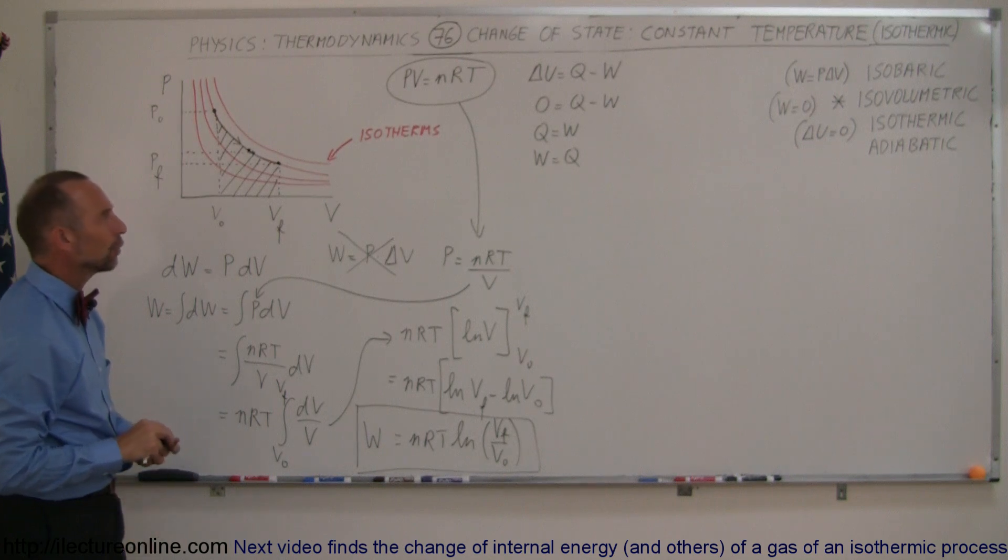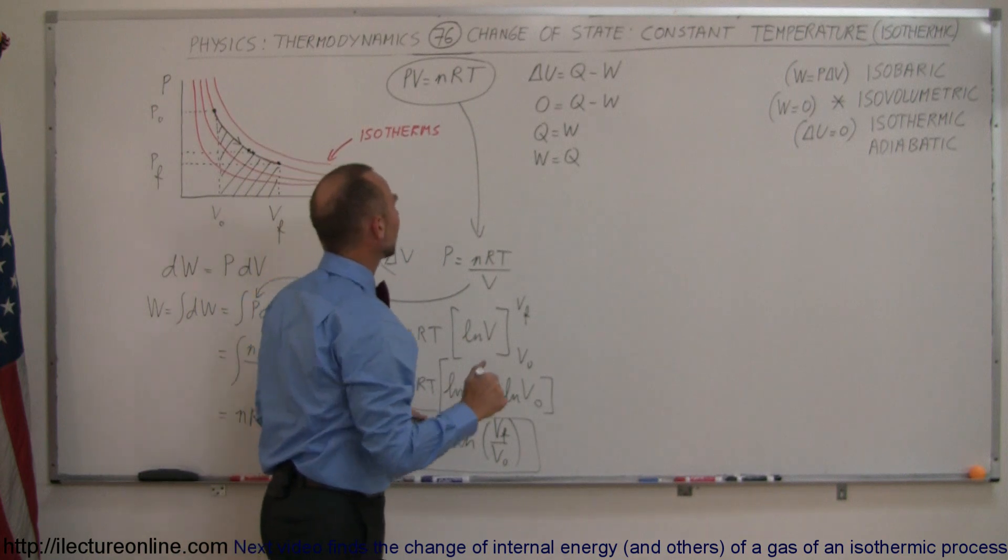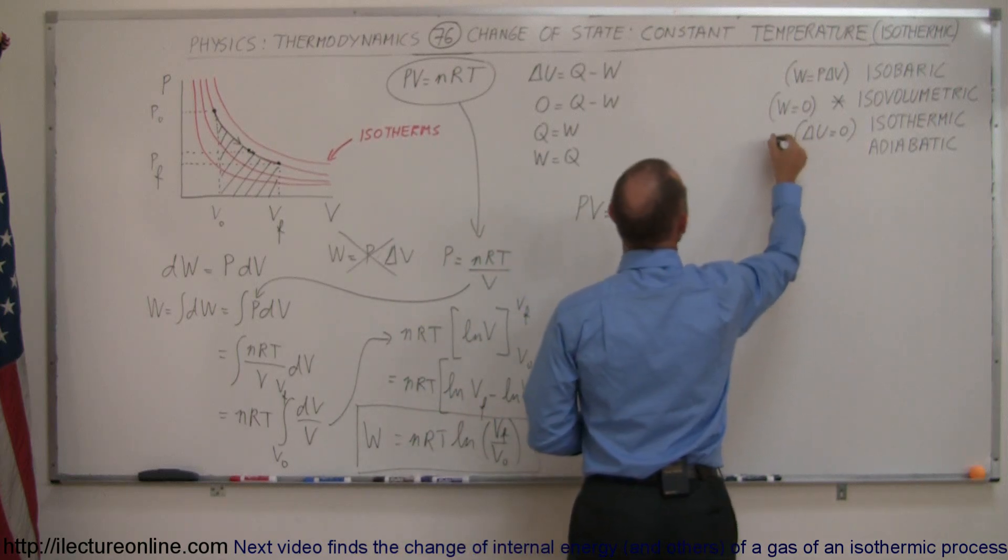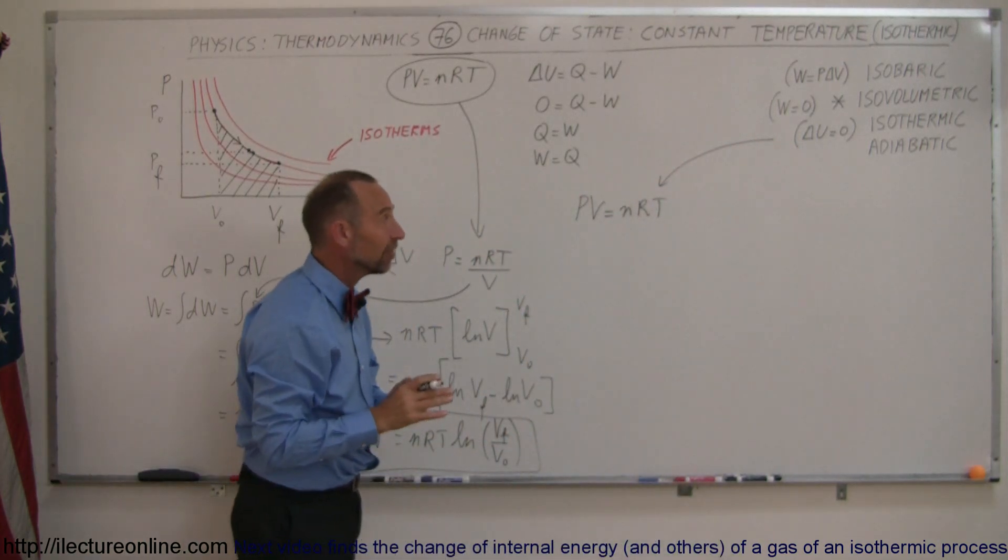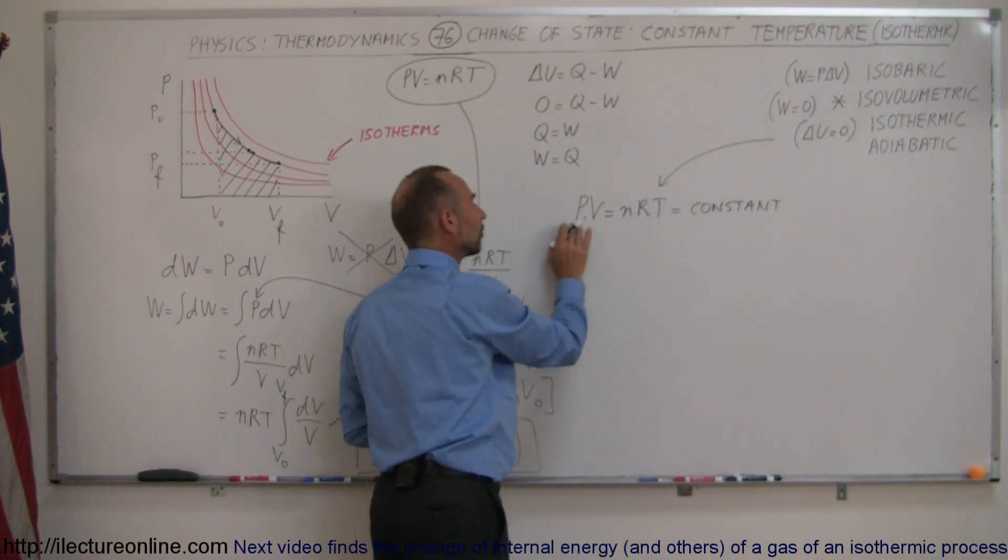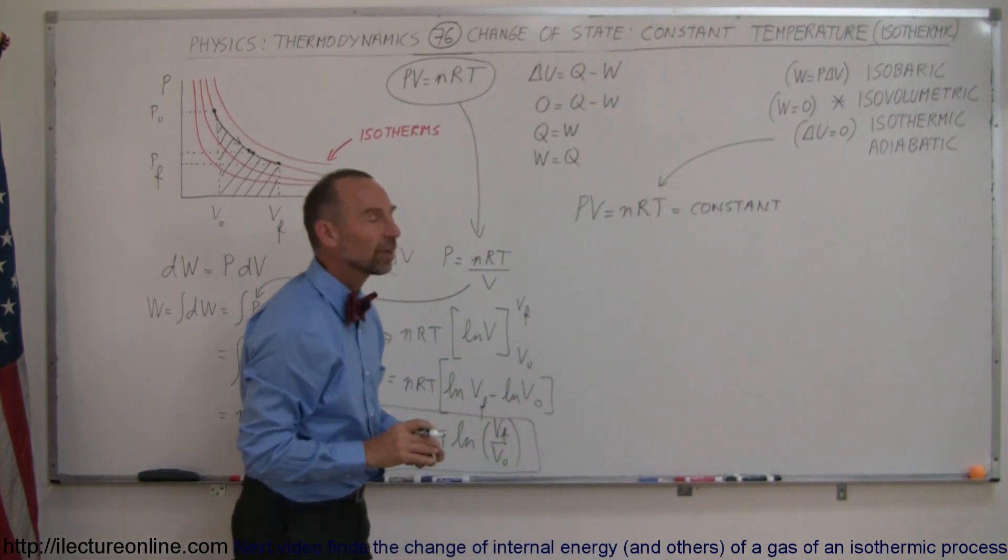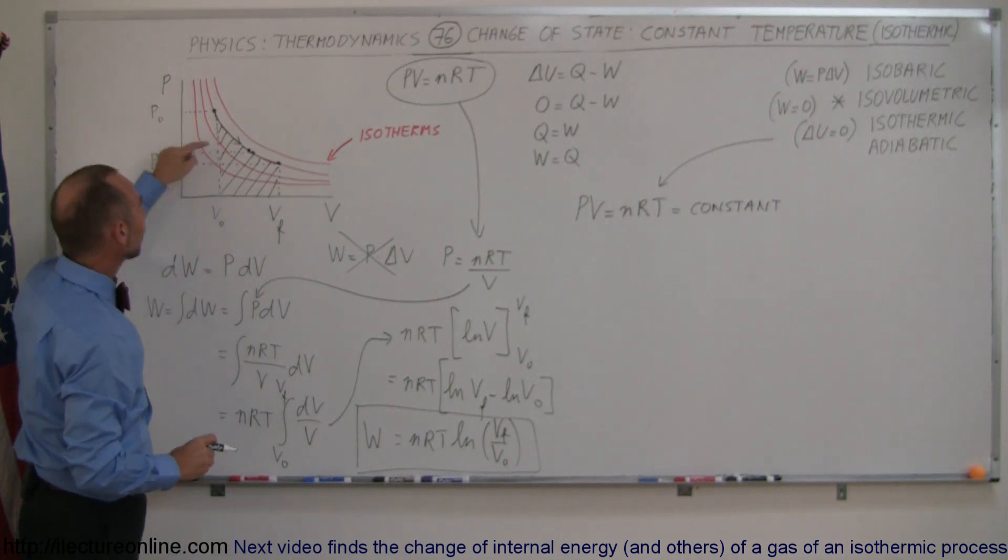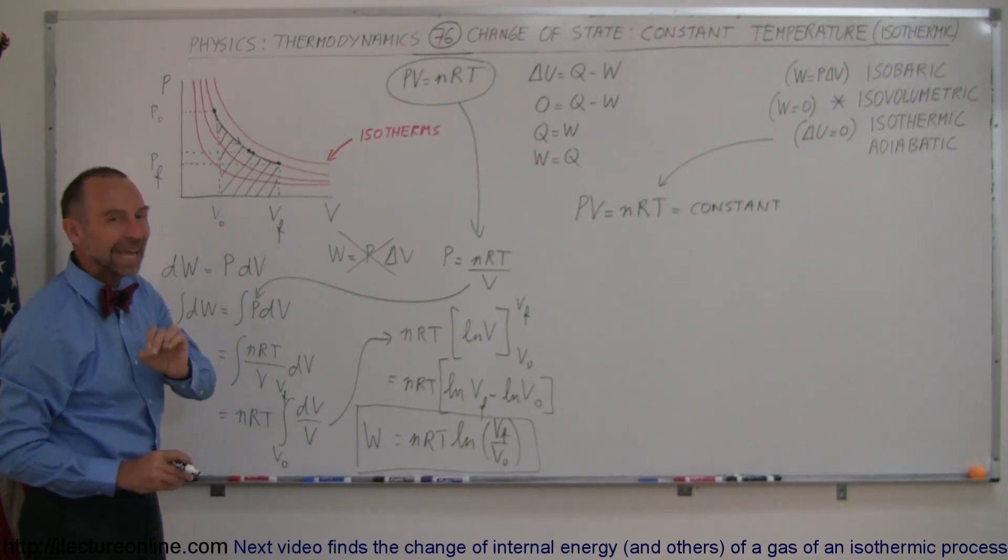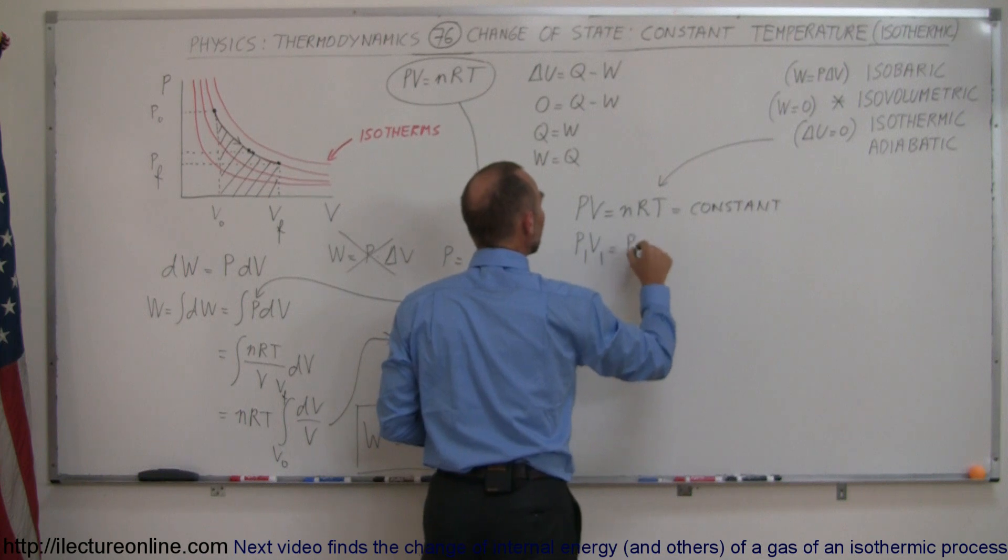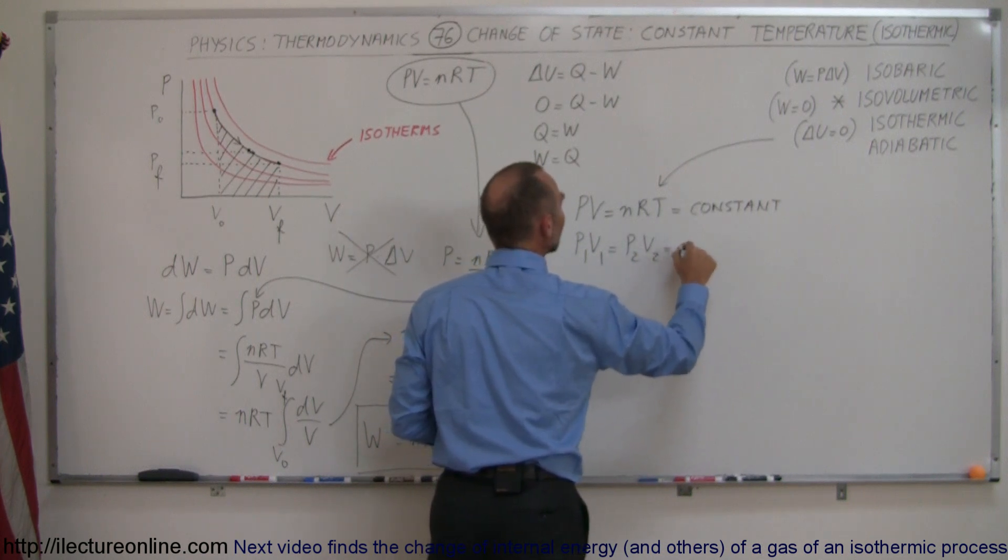But sometimes you may not know that, so is there another way in which you can calculate that? Let's go back to this equation right here, and we can see that PV equals nRT. In an isothermic process, since T is a constant, it doesn't change, that means nRT is a constant. What this is telling us is that the product of p times v is always a constant. No matter where you are along this isothermic process, the product of p times v at any point is always equal to the same number nRT.